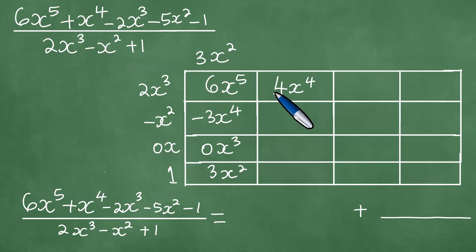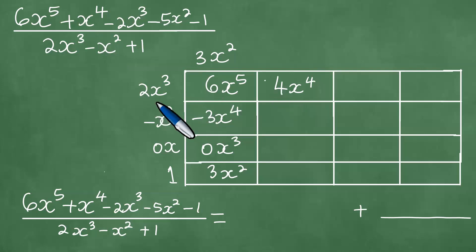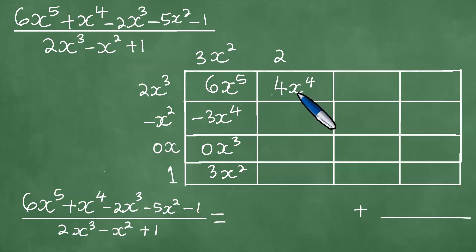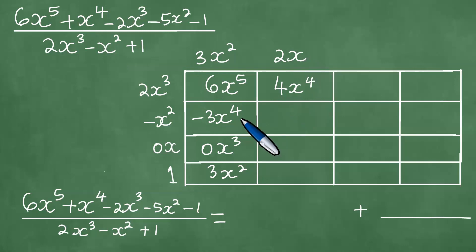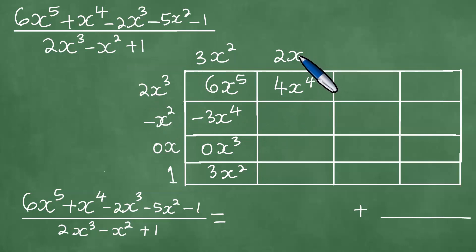We divide this point: 4 divided by 2 gives 2, and x to the fourth power divided by x cubed gives x. So the next quotient term is 2x. If you have 2x cubed times 2x, it is 4x to the fourth power.